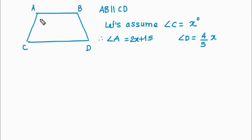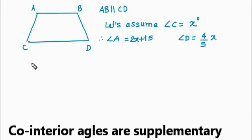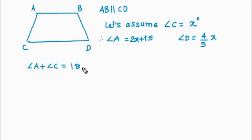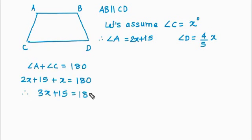Now, in trapezium we know that sum of angle A and angle C is 180 degree. So angle A plus angle C is equal to 180. So we know angle A, angle A is 2x plus 15. And angle C is x. And therefore, 3x plus 15 is equal to 180 degree.